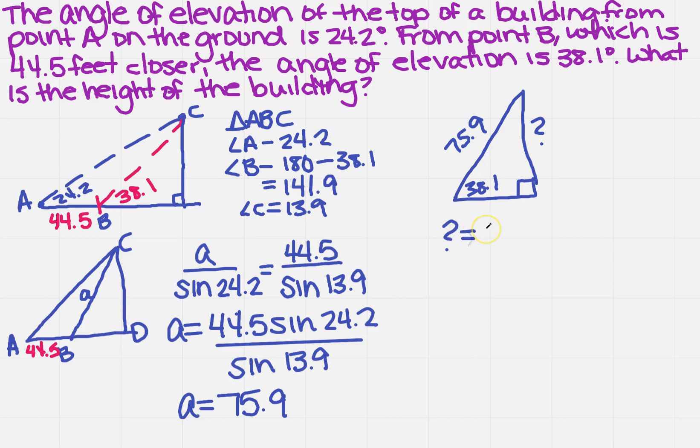So how am I going to do this? Based on my rules for sine, cosine, all that jazzy stuff we've already done, you're going to get 75.9 sine of 38.1. When I enter that into my calculator, it spits out 46.8 feet. So my building is approximately 46.8 feet tall.